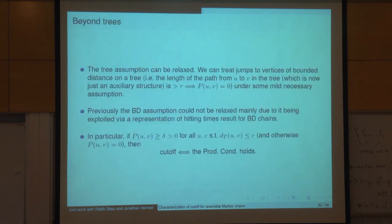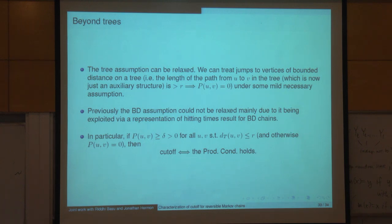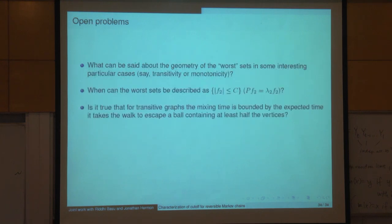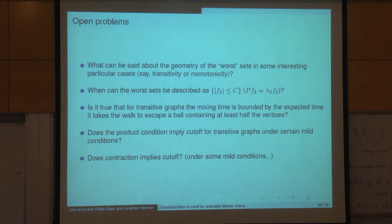That's what distinguishes trees from general spaces — in general it's hard to say what are the sets that are hardest to hit, but in a tree we can understand it and hence complete the analysis of cutoff. The birth-and-death case which was analyzed before was very sensitive as it used precise representations of hitting times. Now we have a more robust criterion, so we can work with chains on the segment that jump a larger distance. There's still a lot of open problems, and most of the work is still ahead. Thanks for your attention.